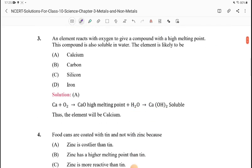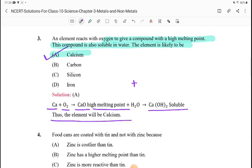Question 3: An element reacts with oxygen to give compound with high melting point. This compound is also soluble in water. The element is calcium. Calcium reacts with oxygen giving exothermic reaction: Ca plus O2 gives CaO. It will be high melting point. If it reacts with water, CaO plus H2O gives Ca(OH)2. Then it will be soluble in water. So the answer is calcium.